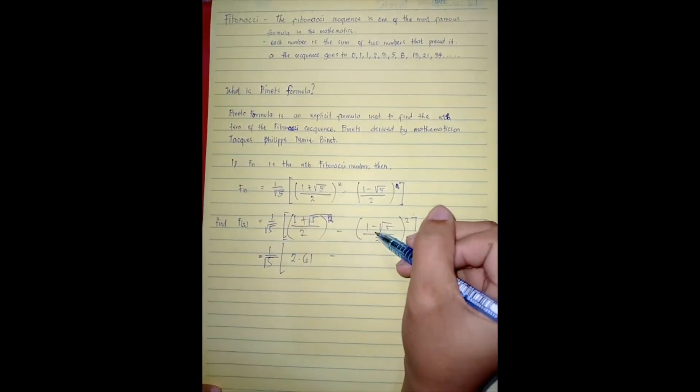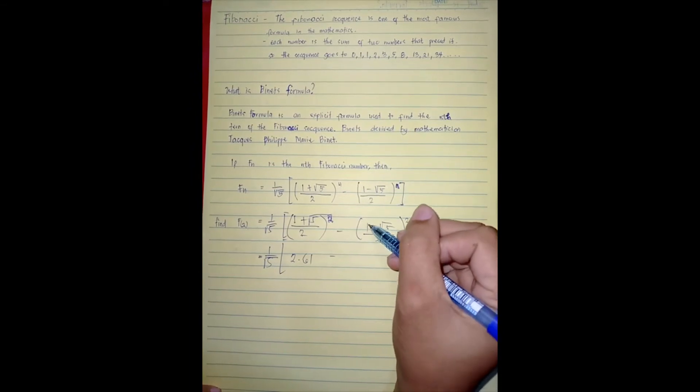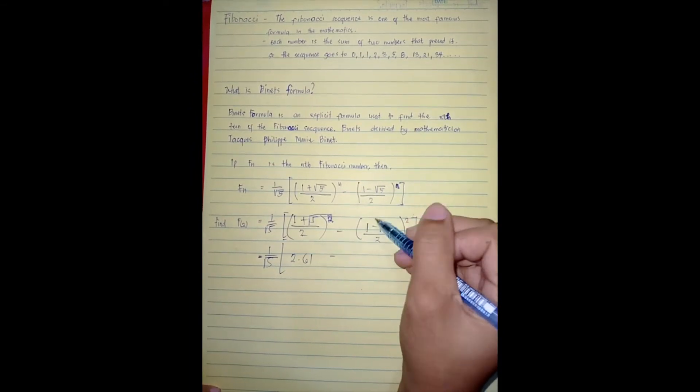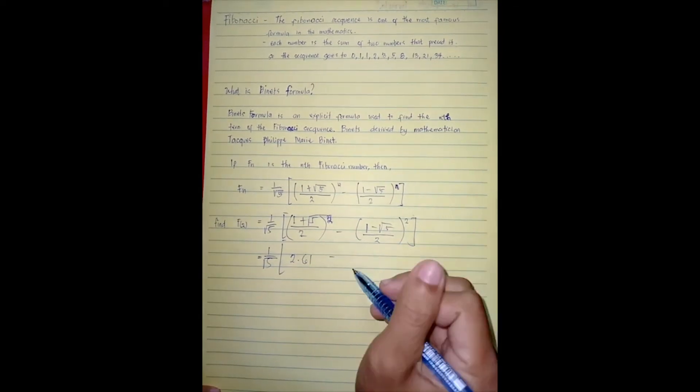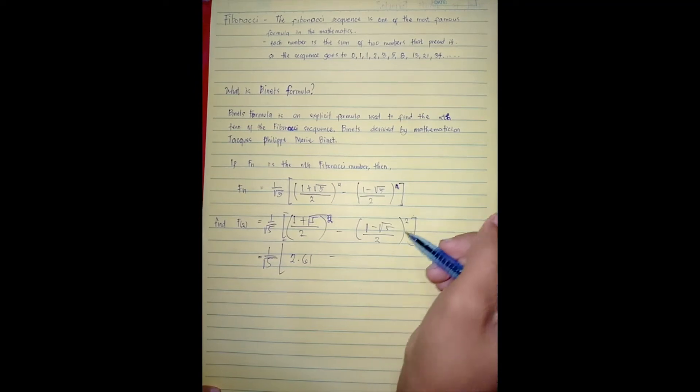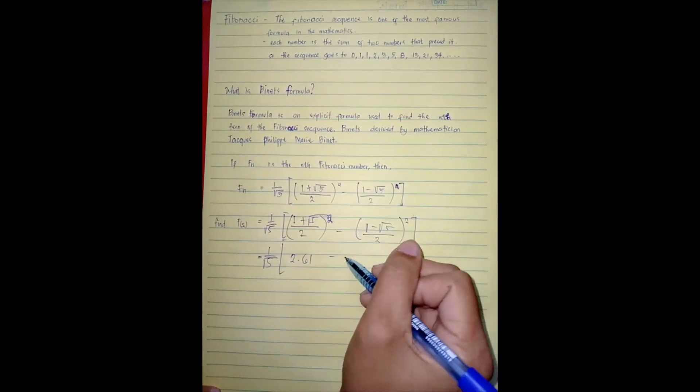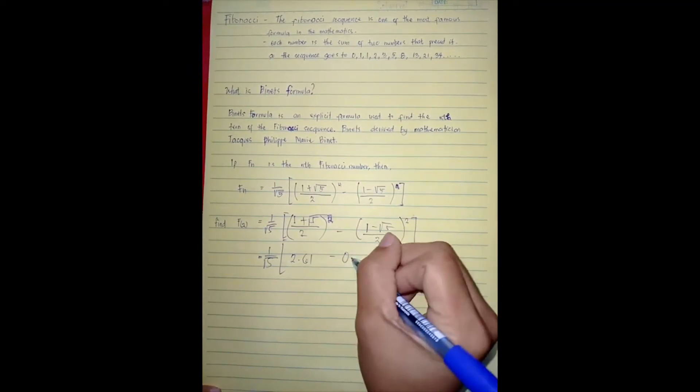So minus, kagaya lang ng ginawa natin dito, gagawin din natin sa kabila, so pero dito minus na, one minus square root of five divided by two, yung answer nun raised to two is equals, may nakuha tayong 0.38.